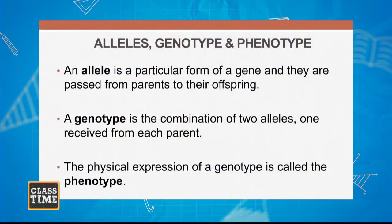We need to know the meaning of an allele, phenotype, and genotype. An allele is a particular form of a gene and they are passed from parents to their offspring. A genotype, on the other hand, is a combination of two alleles, one received from each parent. And the phenotype is a physical expression of a genotype. We have inherited genes from our parents and sometimes some of these genes have dominant characteristics.